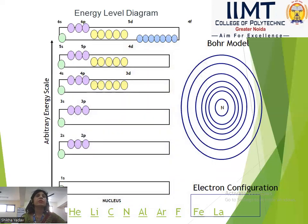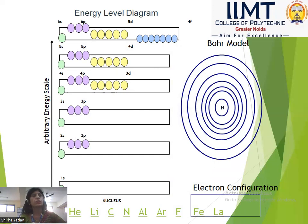Next we have the Bohr model. According to the Bohr model, in 1913 Niels Bohr gave a theory regarding the distribution of electrons. The main postulates of this theory are: first, electrons revolve in well-defined circular orbits.